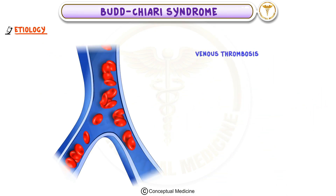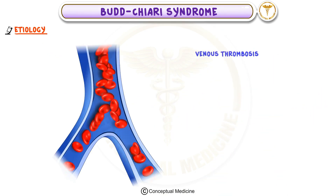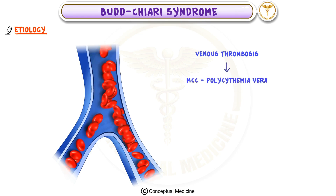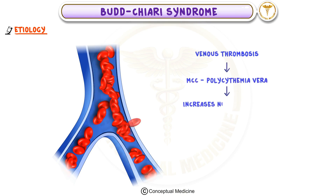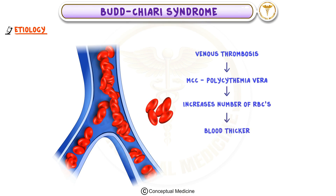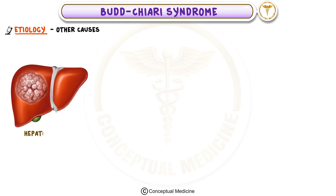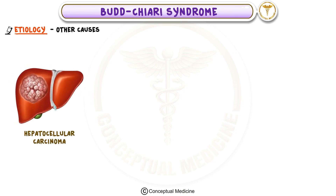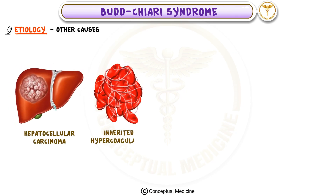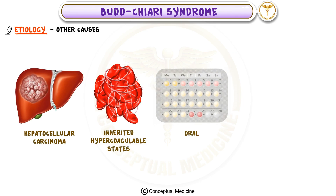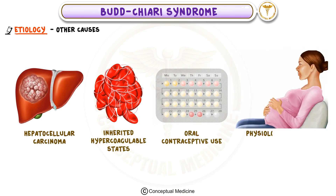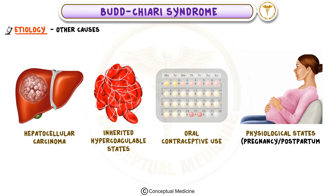The most common underlying cause of venous thrombosis in this condition is polycythemia vera, a disorder that increases the number of red blood cells, making the blood thicker and more prone to clotting. Other causes include hepatocellular carcinoma, certain inherited hypercoagulable states, oral contraceptive use, and even physiological states like pregnancy or the postpartum period.